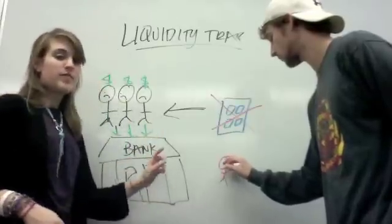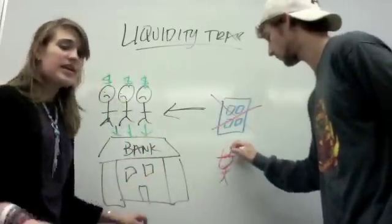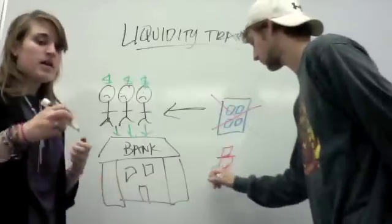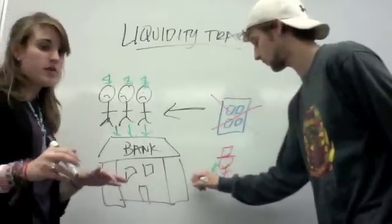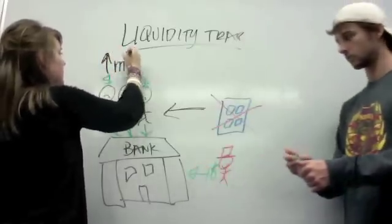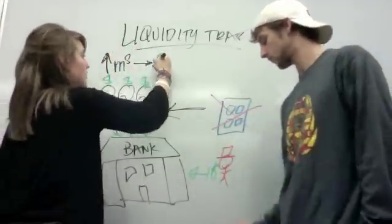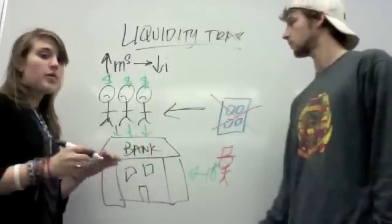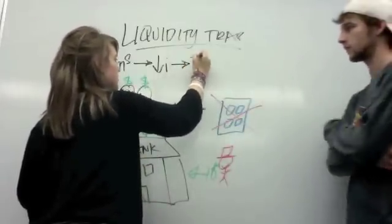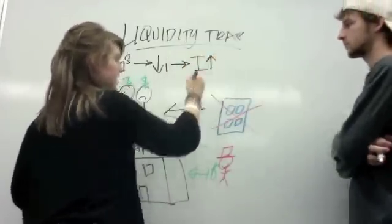So then, Fred from the Fed comes along, and he decides that he's going to give more money to the banks. He's going to increase the money supply, because here's what he's hoping. He's hoping that an increase in the money supply is going to lead banks to lower their interest rates. He's hoping with lower interest rates, it's going to attract more people to invest. So there's going to be an increase in investments.